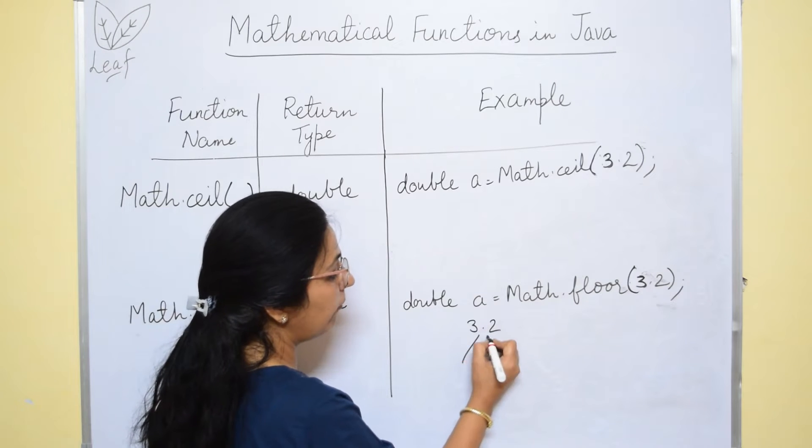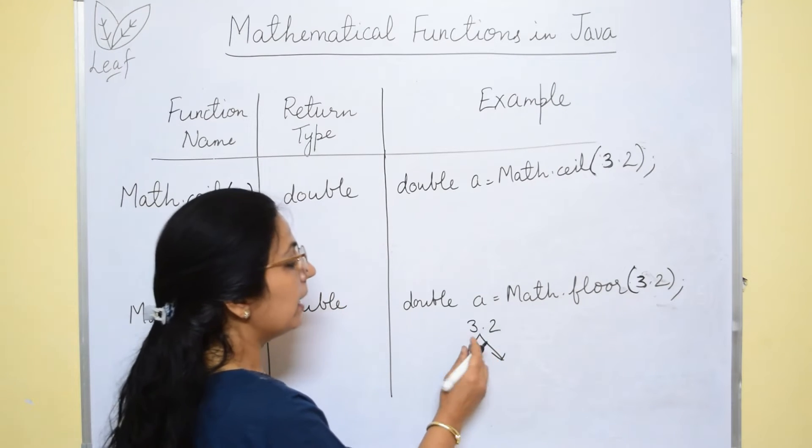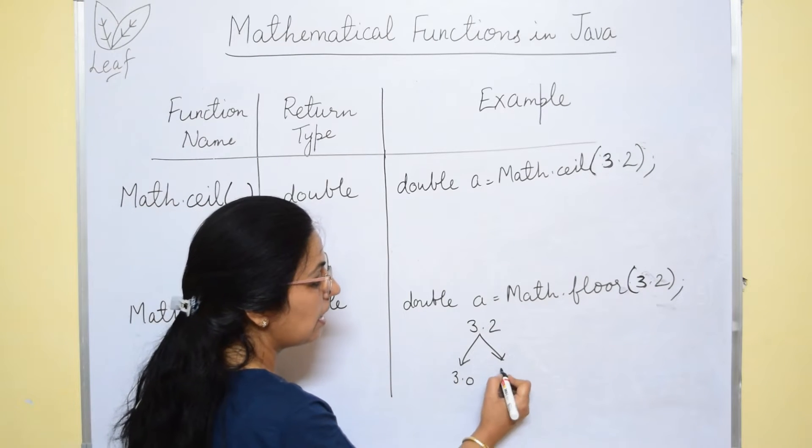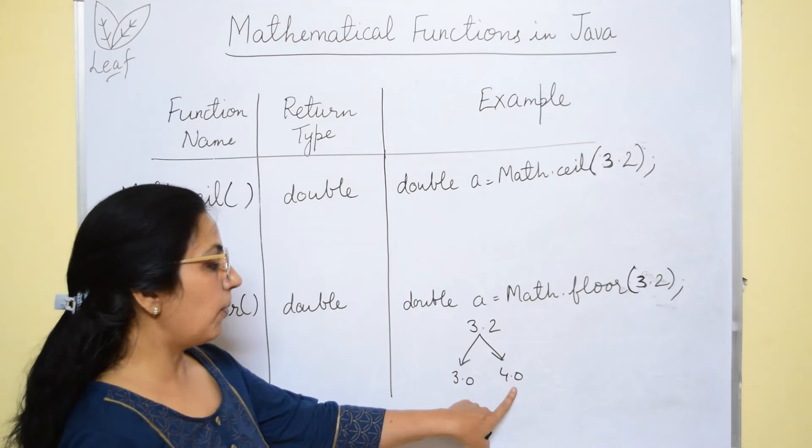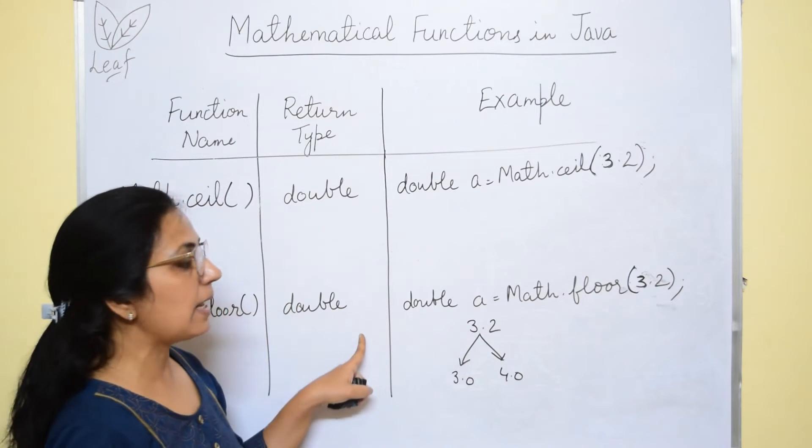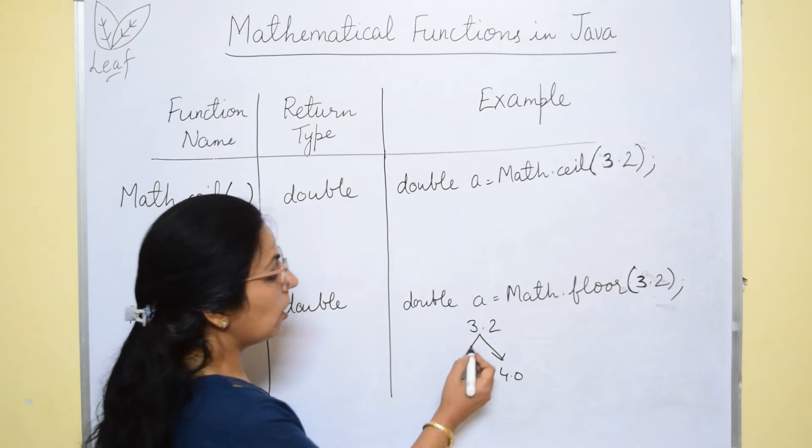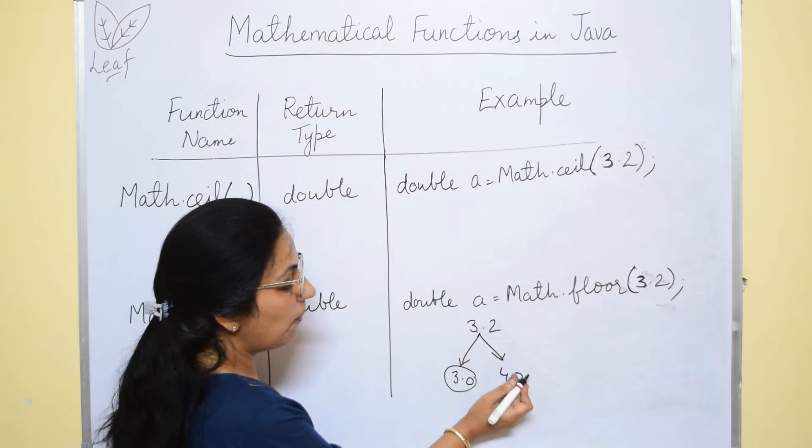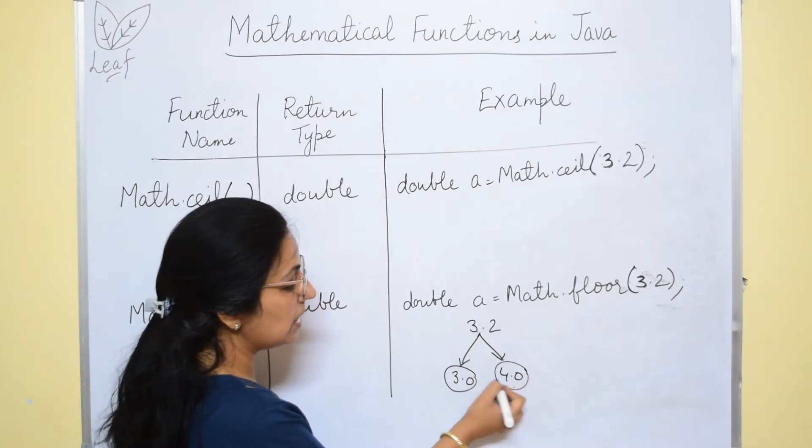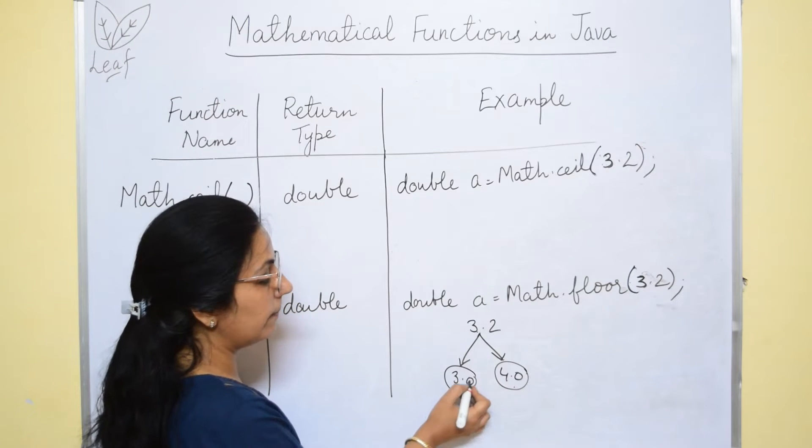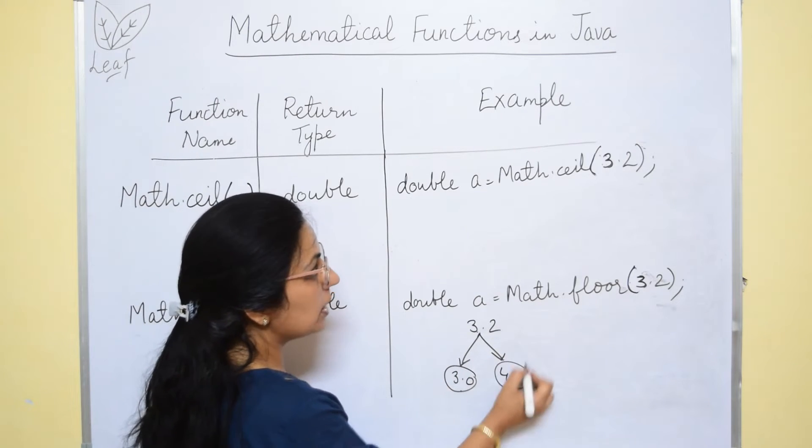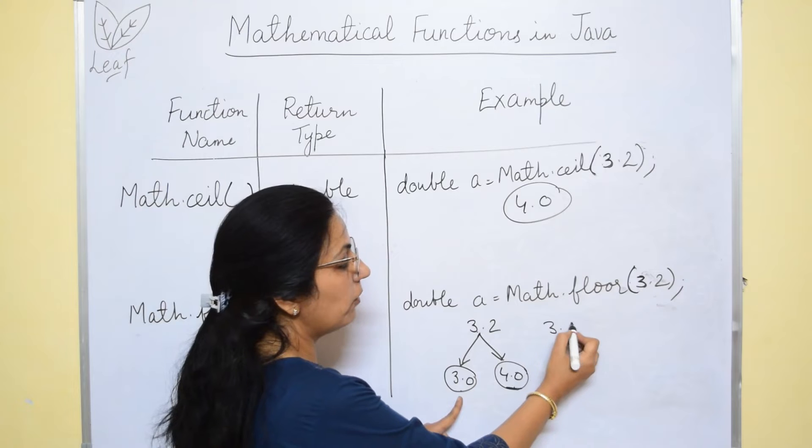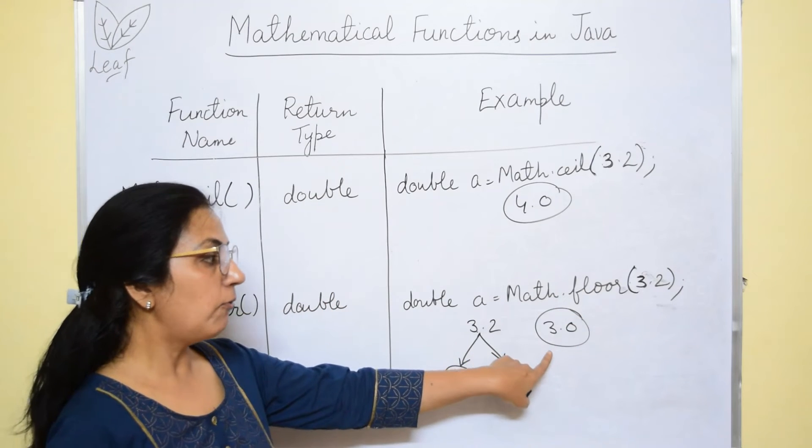Now, how to check the floor and ceil value? 3.2. The two values around it which are integers? We will write them. 3.0 or 4.0. I have written in 0.0 because the return type is double type. So here 3.0 is just below this and 4.0 is just next nearest highest integer, nearest lowest integer. So 4.0 will be the answer for math.ceil and 3.0 will be the answer for math.floor.